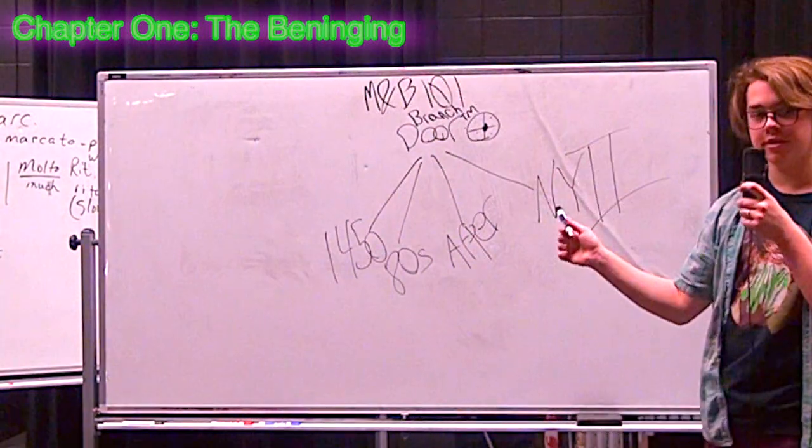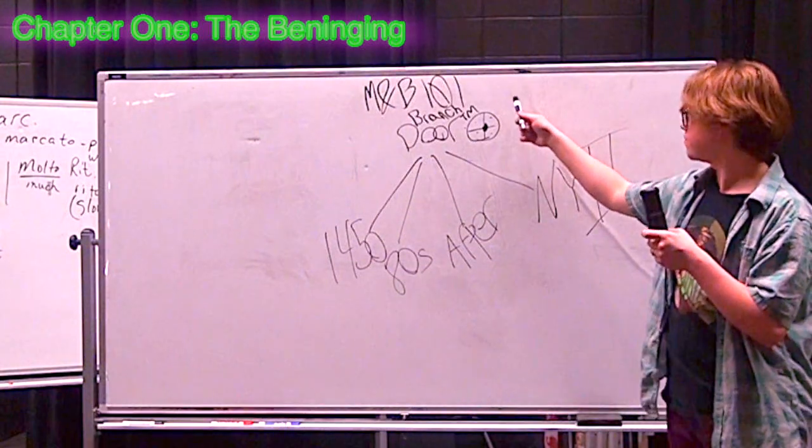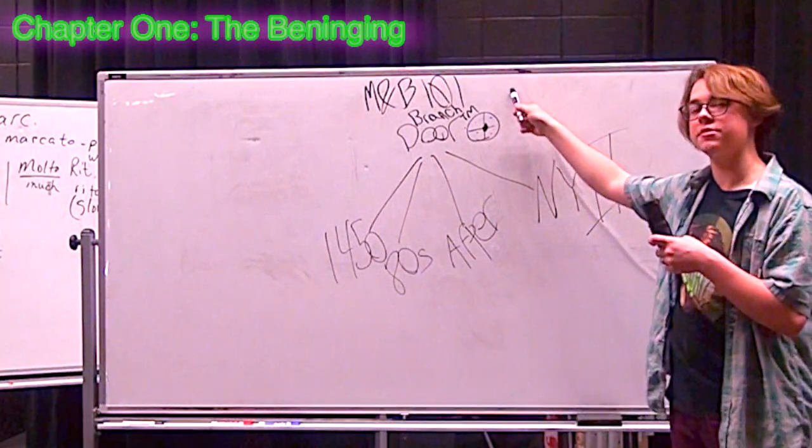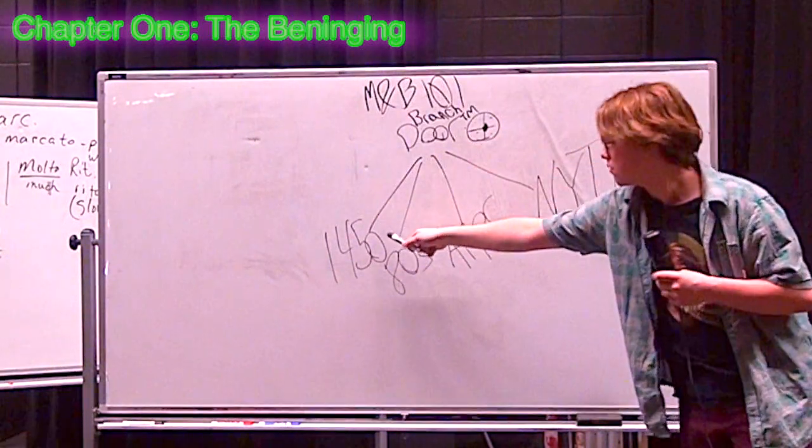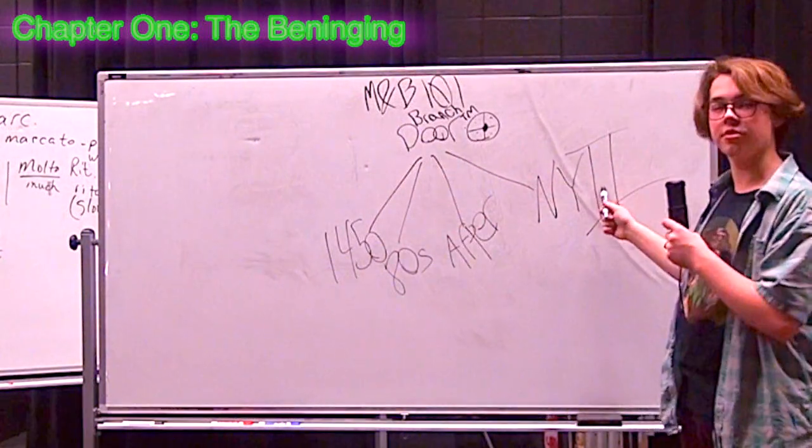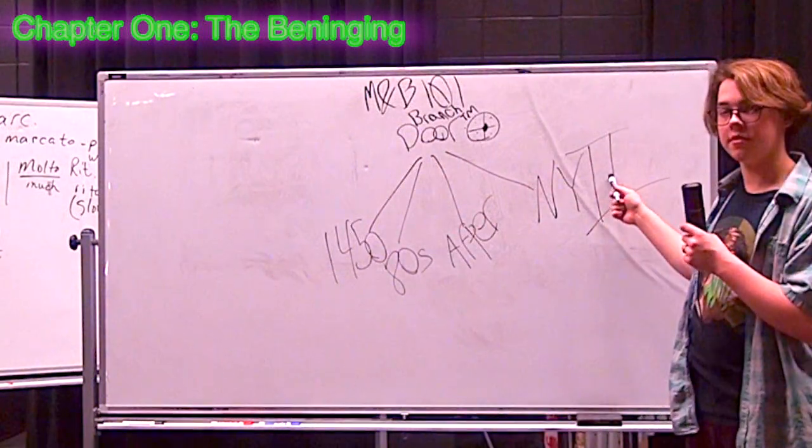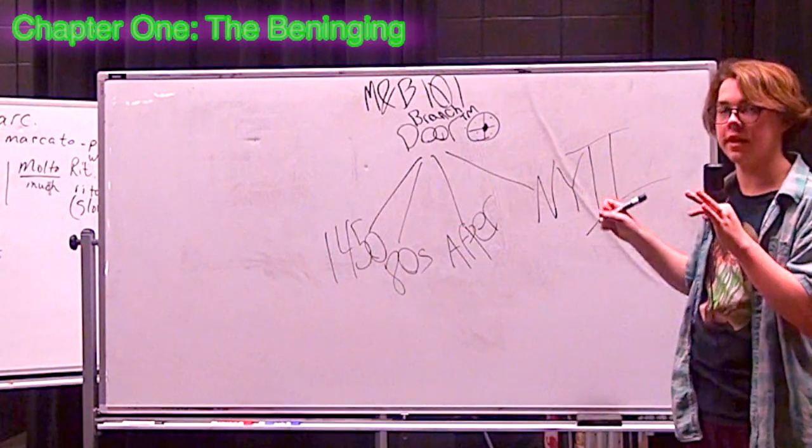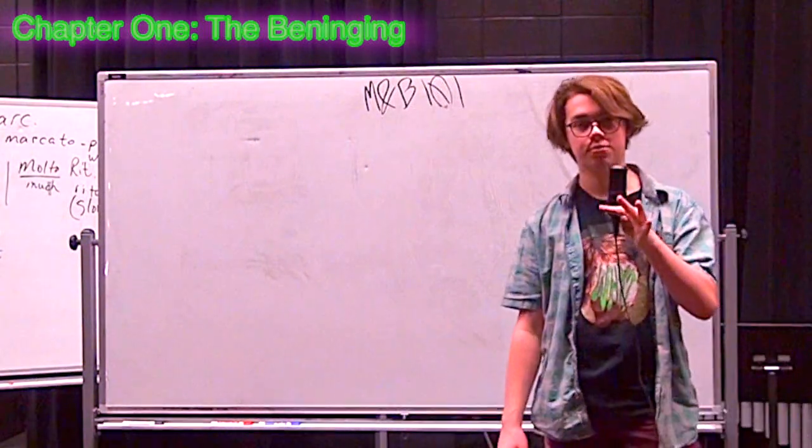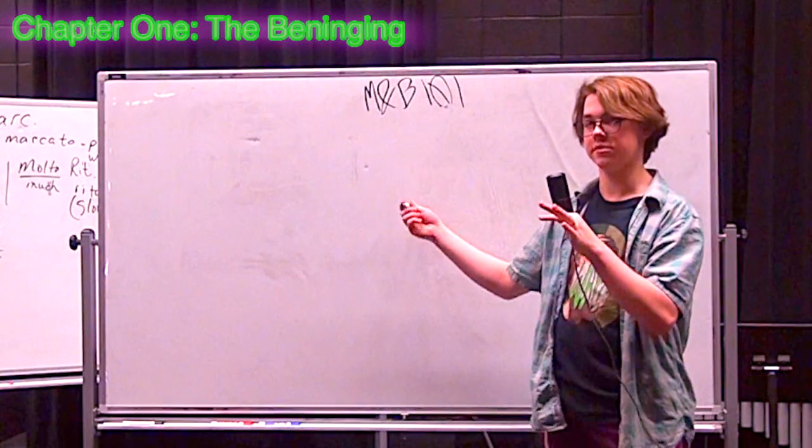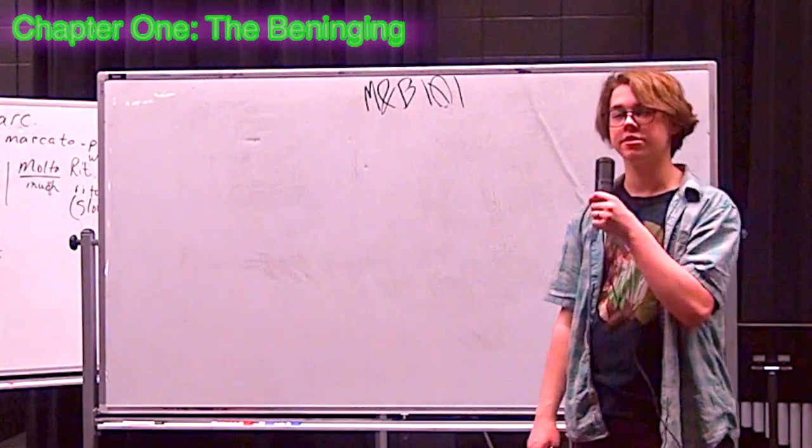TM. Now, the branch door allowed TM access from the neighborhood TM to 1450, 80s after, and New York 2. And from there, things got pretty fucking wacky. Going to be completely honest. And that concludes chapter one, the beginning. Waston. And so now we will move on to chapter two, branching out.